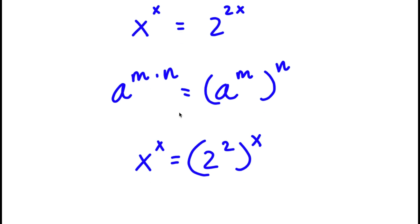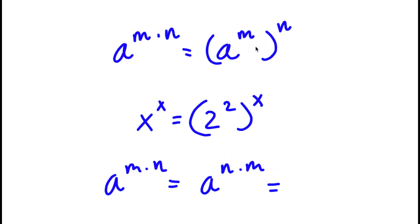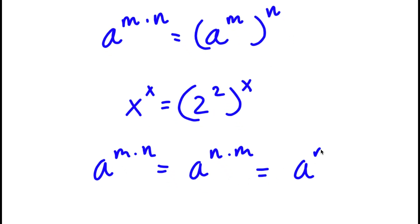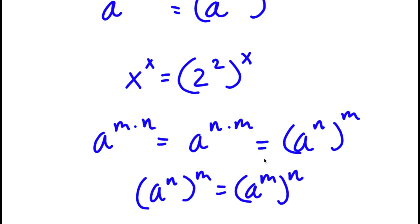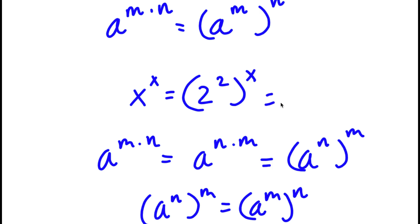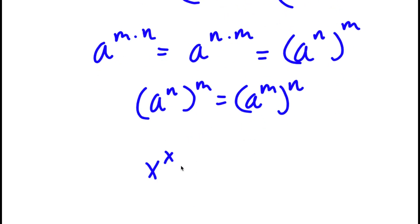Now, a to the power of m times n also equals a to the power of n times m, so we can switch the order. This means a to the power of n to the power of m equals a to the power of m to the power of n. So 2 to the power of 2 to the power of x is the same thing as 2 to the power of x to the power of 2. Now I have x to the power of x equals 2 to the power of x to the power of 2.